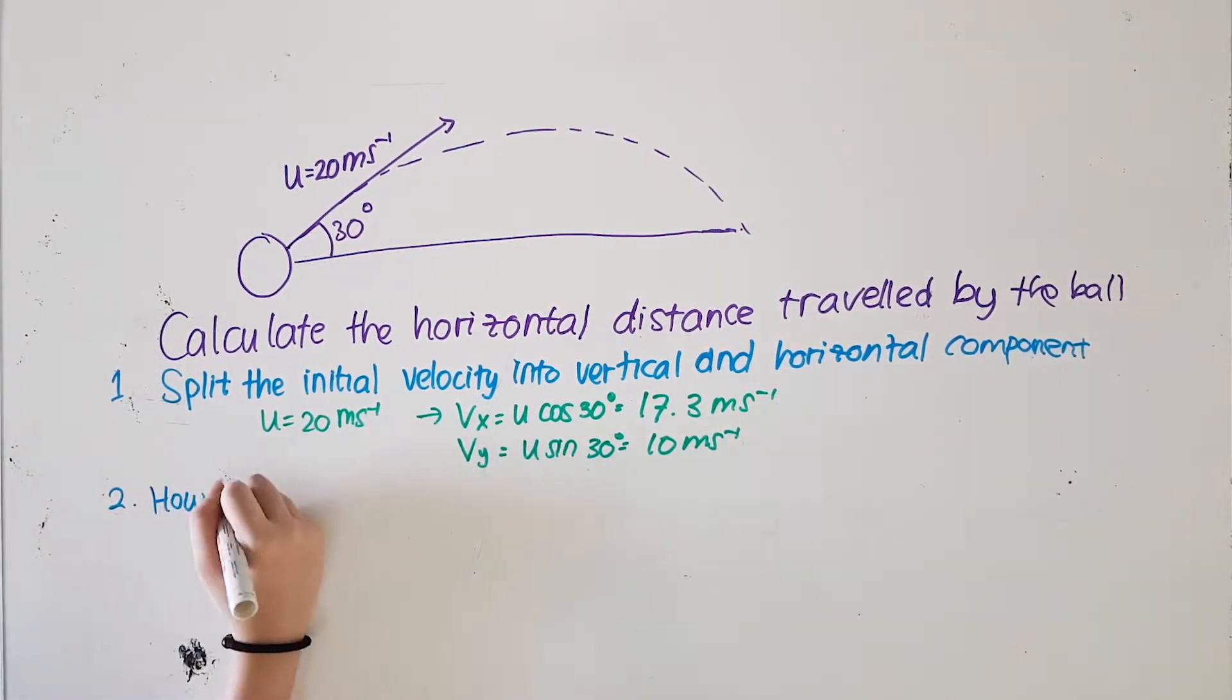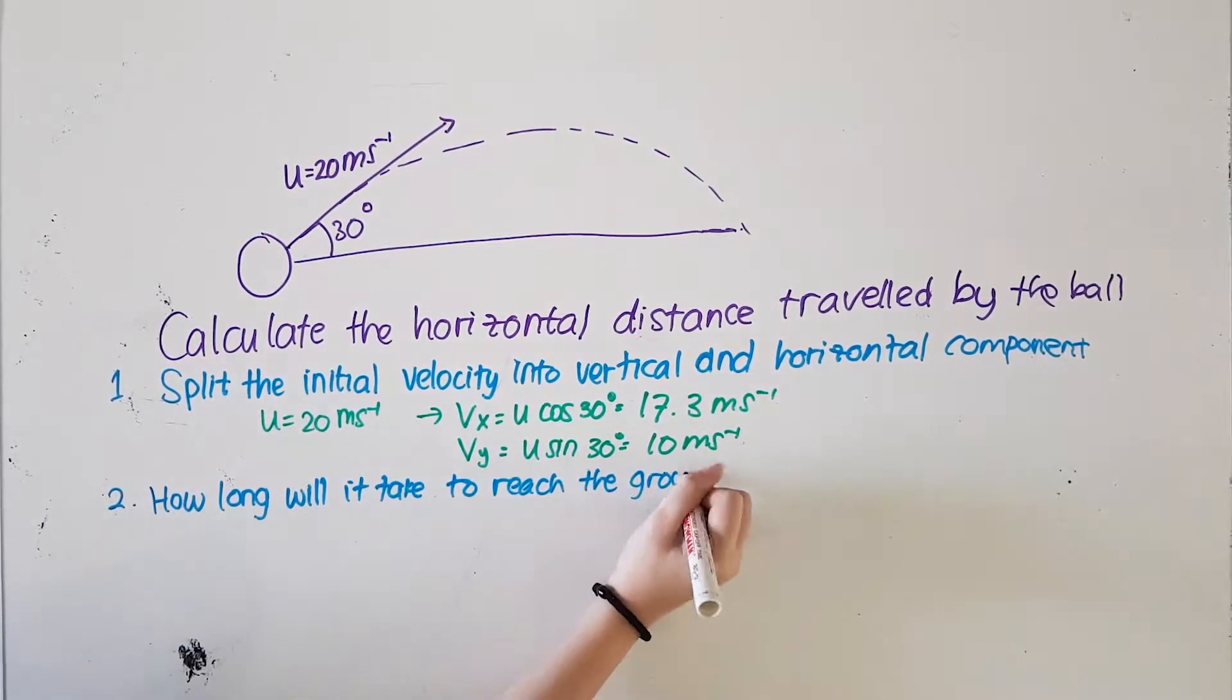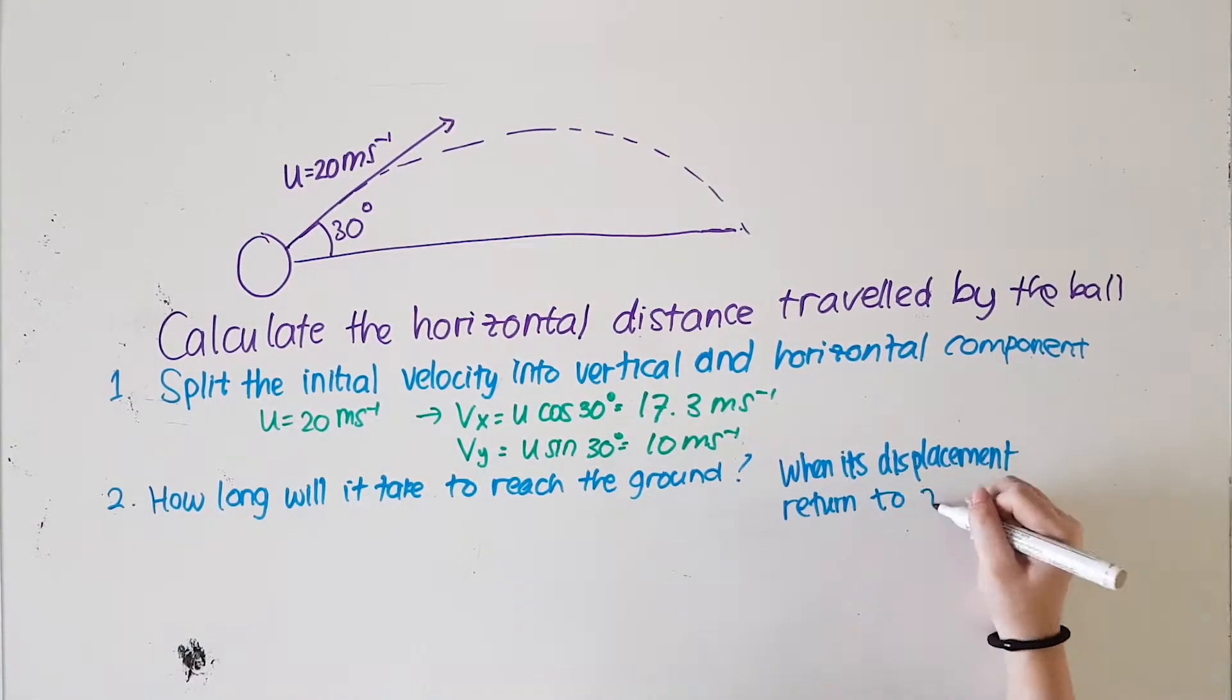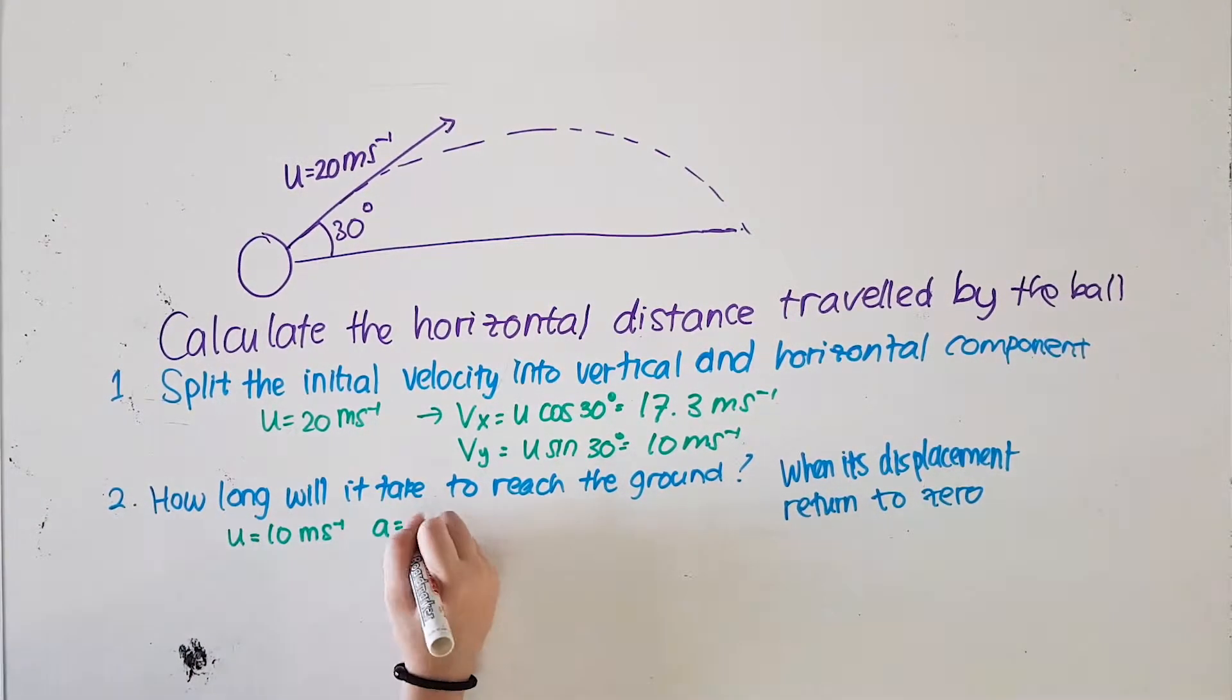For the second step, we should consider the ball's vertical motion. How long will it take to return to the ground? In other words, we must find the time when its displacement is zero.